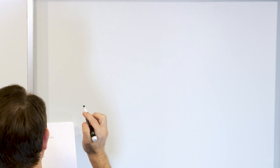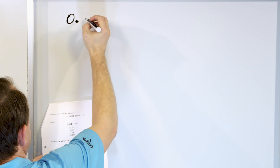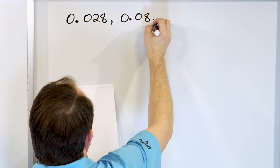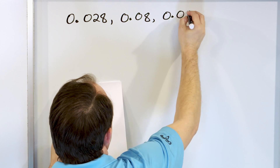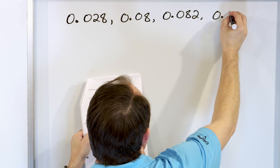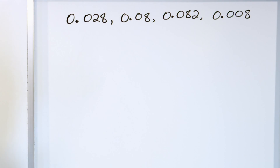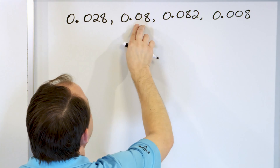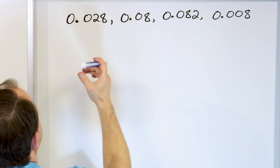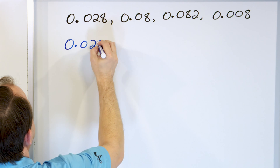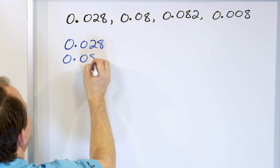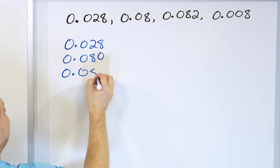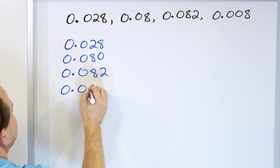This next one can get a little tricky, so we're going to be very careful. We have: 0.028, 0.08, 0.082, and 0.008. We want to make sure we have the same number of digits: three digits here, three here, three here, but only two in 0.08. So we write them stacked up: 0.028, then 0.08 padded to 0.080, then 0.082, then 0.008.